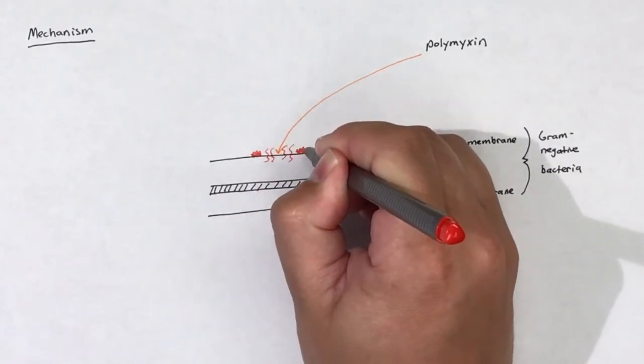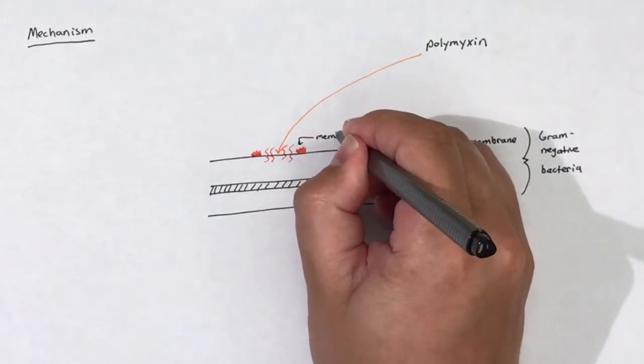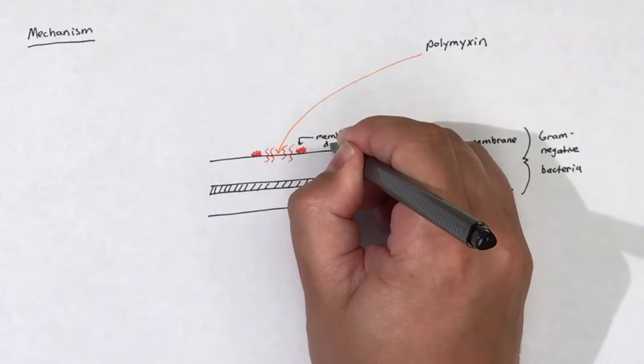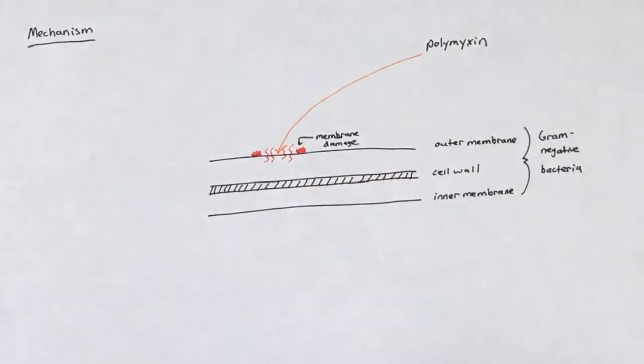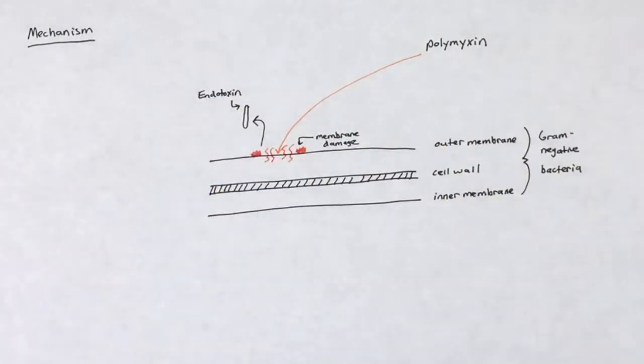Polymyxins are strongly attracted to the phospholipid bilayer that makes up the outer membrane of the gram negative bacterium, and when polymyxins interact with the phospholipid bilayer, they disrupt and perturb the membrane.